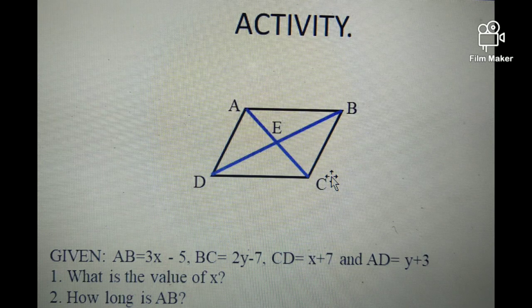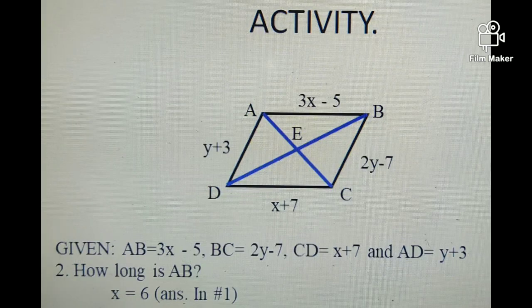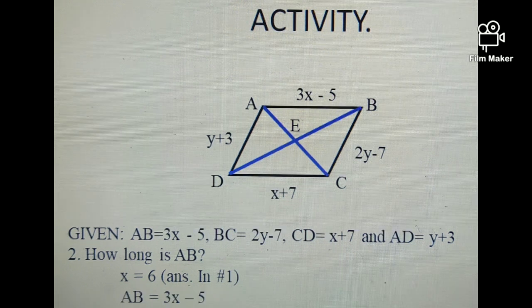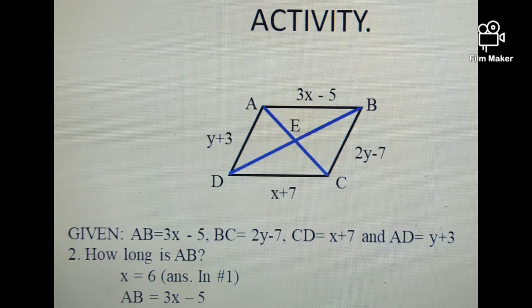Now let's proceed to question number 2. How long is AB? We'll use our answer from number 1 to solve this question number 2. We know that X is equal to 6, so this is what we'll substitute. So AB is equal to 3X minus 5. We just took this from the figure above, if you notice.